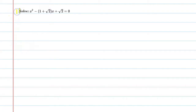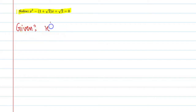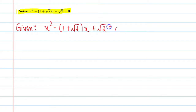Hello students, let's solve this question. The given equation is x squared minus 1 plus root 2 x plus root 2 equal to 0.